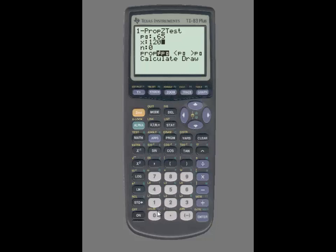So x is 120, the sample size is 200, and now we need to select the direction of the alternative hypothesis. Recall that the sociologist believes that the percentage is different at the local high school. So we're going to select this first option of not equal to.